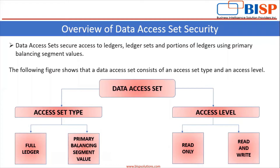This figure shows that a Data Access Set consists of an access type and access level. In access type, you can give access to the full ledger or to only a primary balancing segment value. When you talk about access level, you can provide access for reading purposes only, where you cannot edit anything.